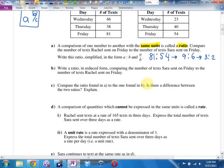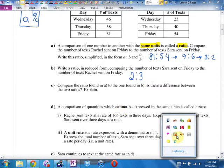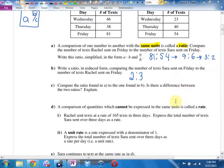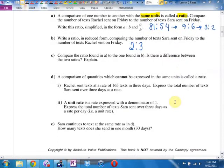Part B says write a ratio in reduced form, comparing the number of texts that Sarah sent on Friday to the number of texts that Rachel sent on Friday. If the ratio of Rachel to Sarah was 3 to 2, what is the ratio of Sarah to Rachel? 2 to 3. And the point is the order matters. Write what they said first first and what they said second second. Part C says compare the ratio found in A to the one in B. Is there a difference? The order matters, but otherwise it reduces to the same thing.